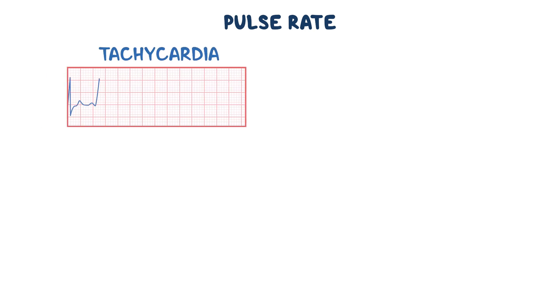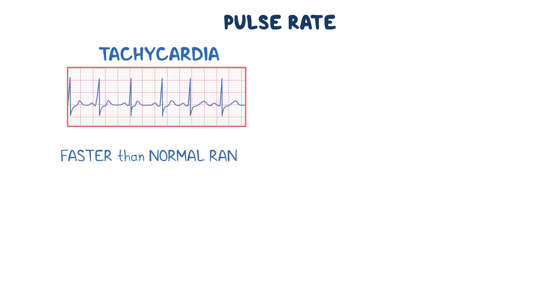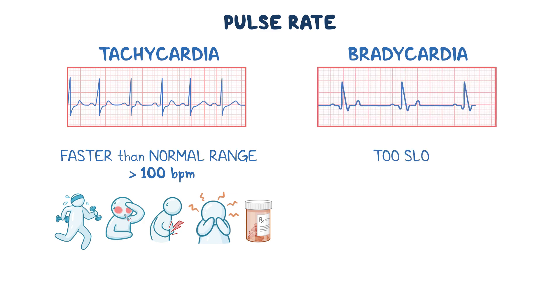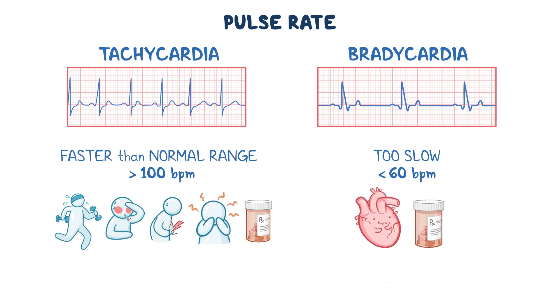Tachycardia is when the pulse rate is faster than the normal range, or over 100 beats per minute for an adult. Tachycardia can occur in response to factors like strenuous exercise, fever, pain, anxiety, or certain medications. In contrast, bradycardia means that the pulse rate is too slow, or less than 60 beats per minute for an adult, and can be due to heart problems or various medications.